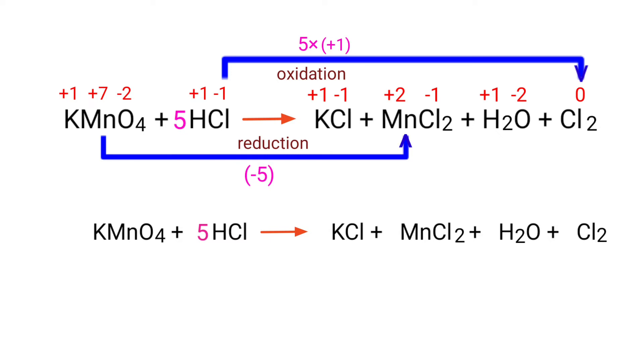Now you can balance the number of atoms in this equation. In the reactants side there are 1 potassium atom, 1 manganese atom, 4 oxygen atoms, 5 hydrogen atoms, and 5 chlorine atoms present. On the products side there are 1 potassium atom, 1 manganese atom, 1 oxygen atom, 2 hydrogen atoms, and 5 chlorine atoms present.